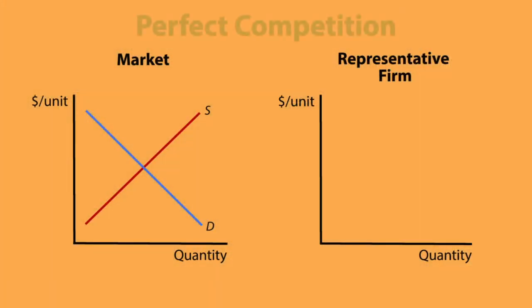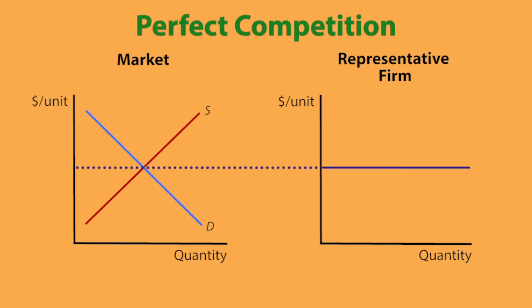First remember what it's like for a perfectly competitive firm. Because these firms are price takers, the demand curve for each firm is a horizontal line at the market price. They can sell all that they want at that price, they just can't raise their price.